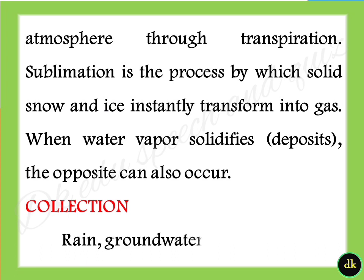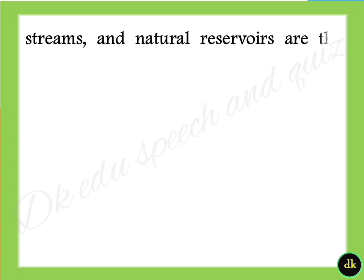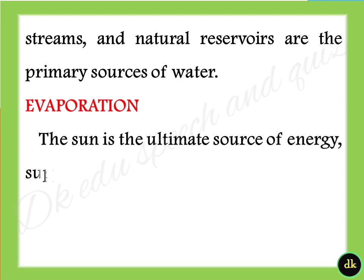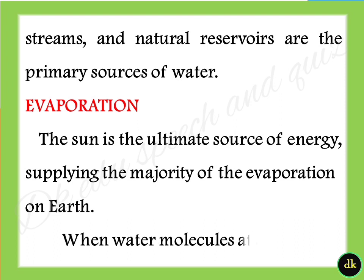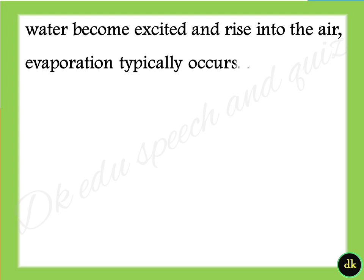Collection: rain, water, ice, rivers, lakes, streams, and natural reservoirs are the primary sources of water. The sun is the ultimate source of energy, supplying the majority of the evaporation on earth. Evaporation typically occurs when water molecules at a body of water become excited and rise into the air.